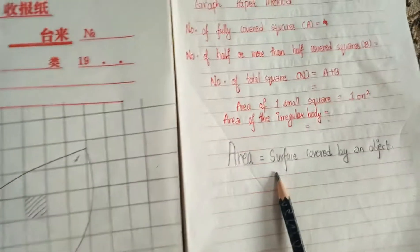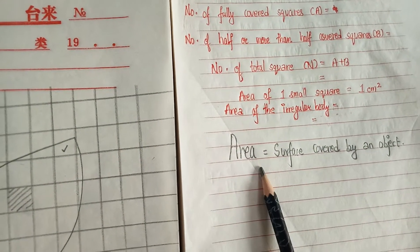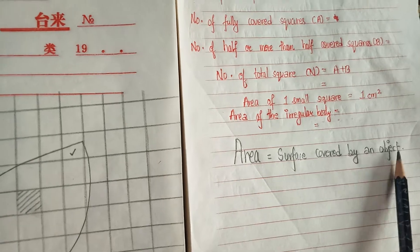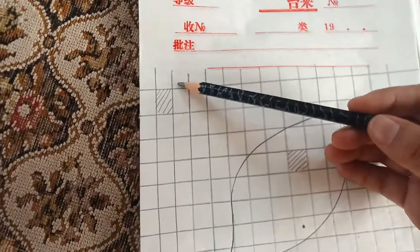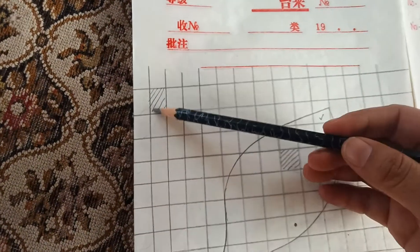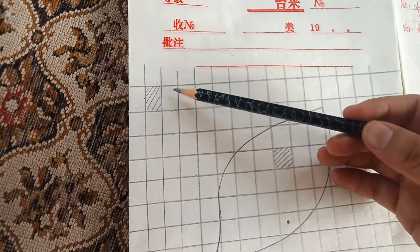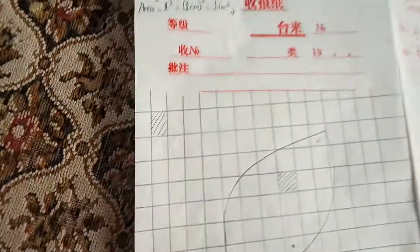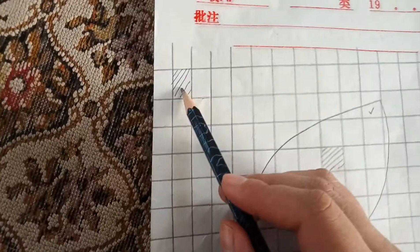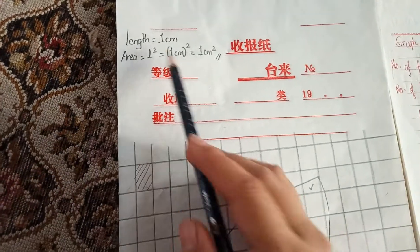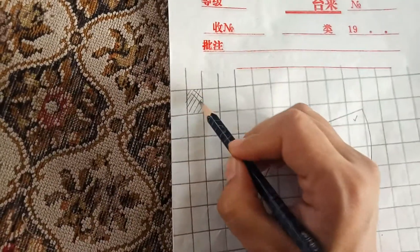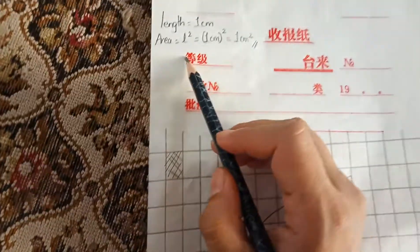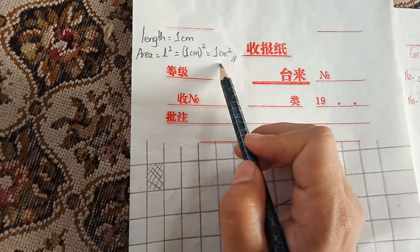Area is the surface covered by an object. The lines, the vertical and horizontal lines, are apart from each other by one centimeter. So the length of each square is one centimeter, and the area of this square, by applying the formula L squared, is one centimeter squared.